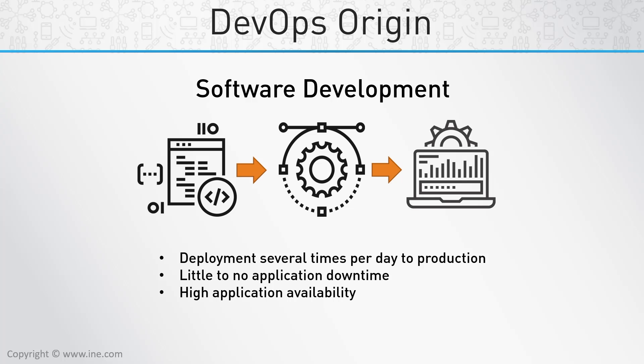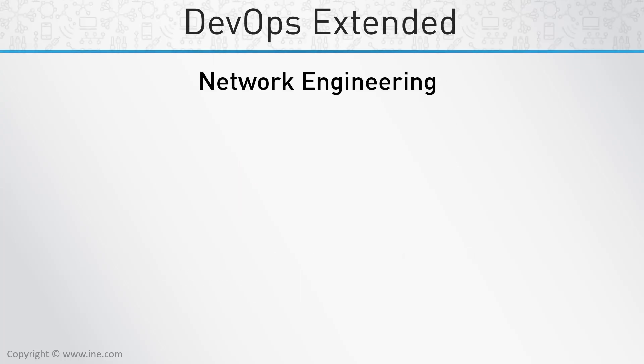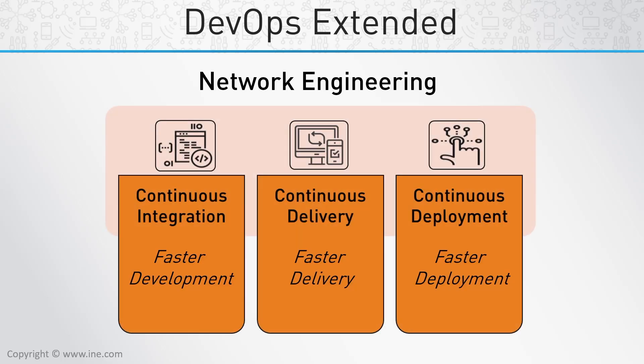As with software, how we build, manage and operate networks is changing. We need a new model — a model that adopts DevOps practices of continuous integration, continuous delivery and continuous deployment to facilitate faster changes while maintaining high network reliability. This also requires ensuring the network team is involved in agile design and development sprints, and that the organizational culture is one that embraces DevOps.